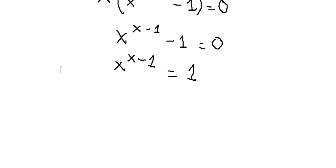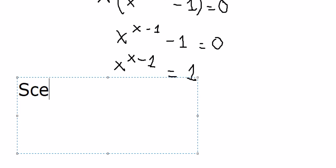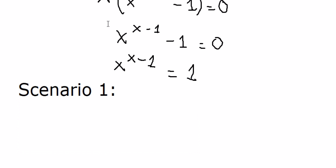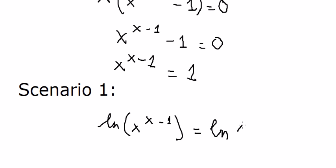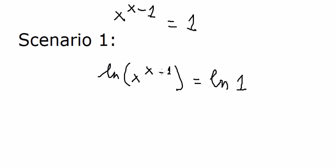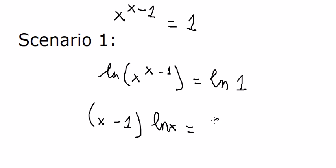Now we have scenario number one. We apply the natural log to both sides. This brings s minus 1 as a power down in front of ln s, and the right side gives us zero.